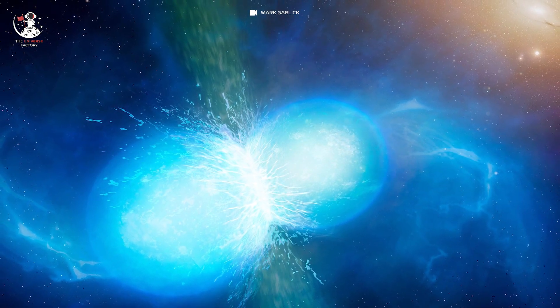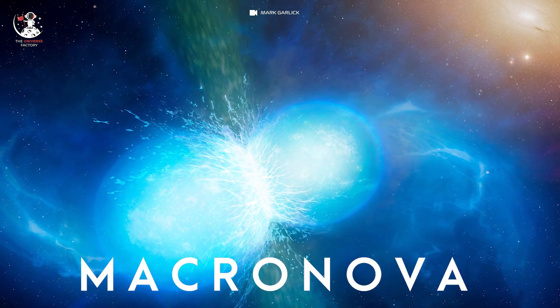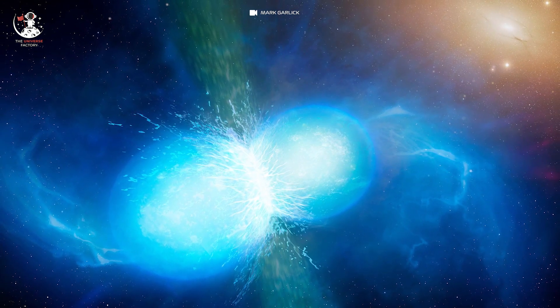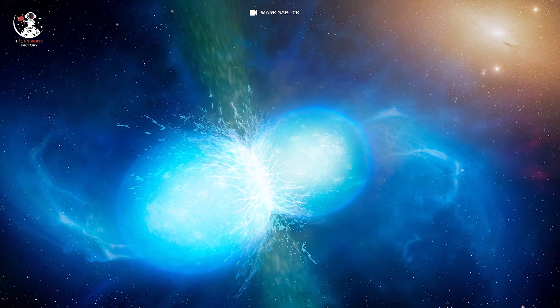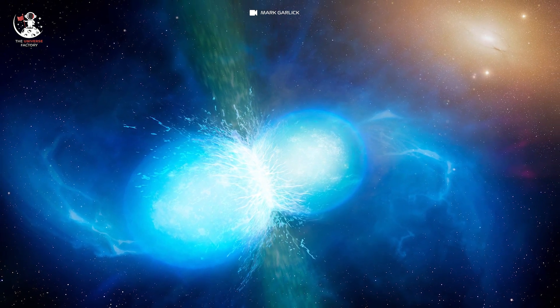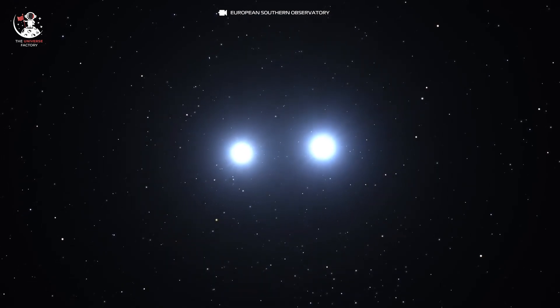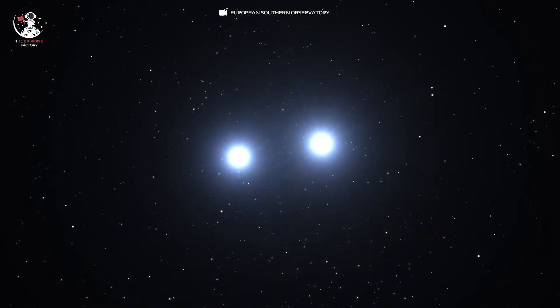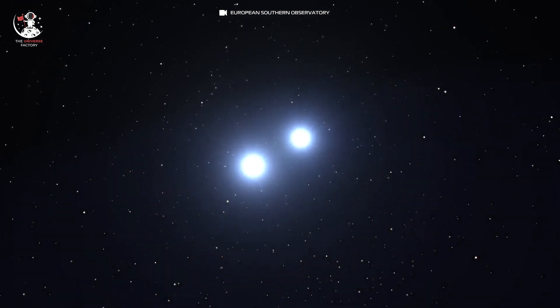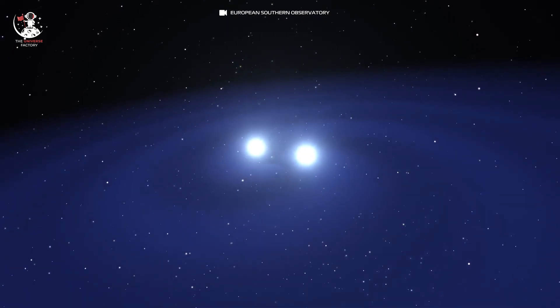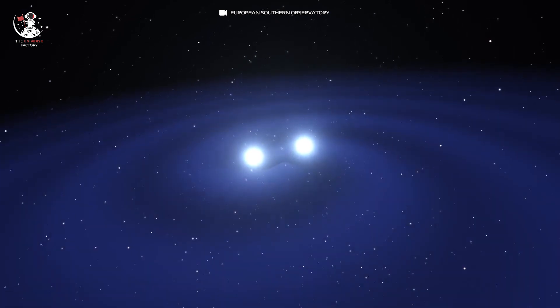A kilonova, also known as a macronova, is an astronomical event that occurs in a compact binary system when two neutron stars or a neutron star and a black hole merge. These mergers are thought to produce gamma ray bursts and emit bright electromagnetic radiation called kilonovae. The energy emitted by the blast can be detected by remote sensors on Earth and in space.